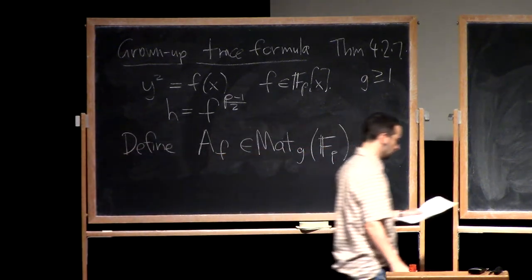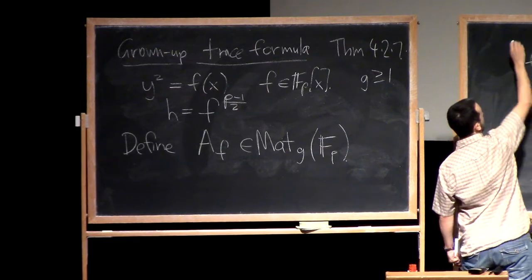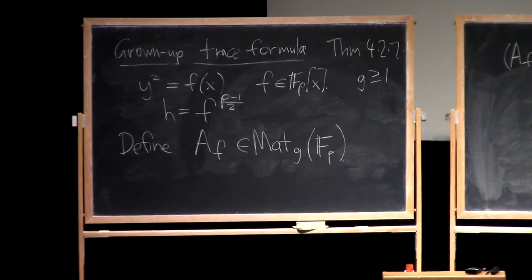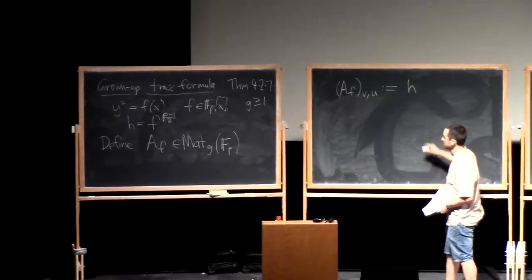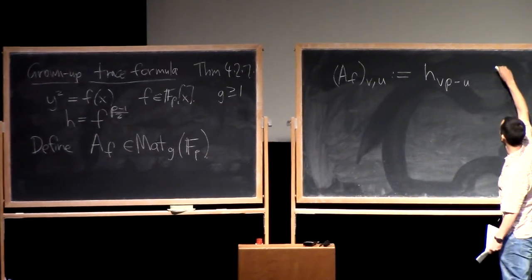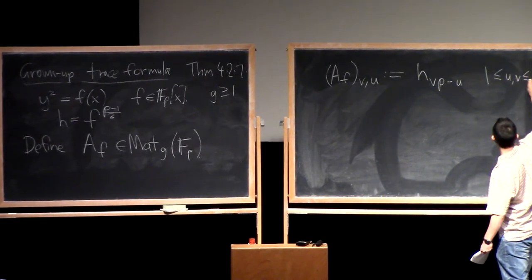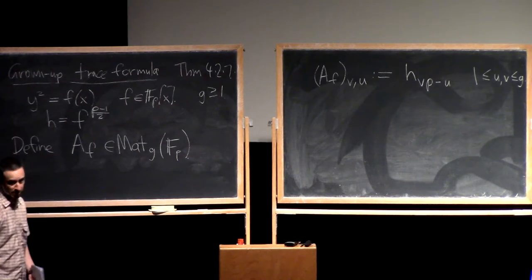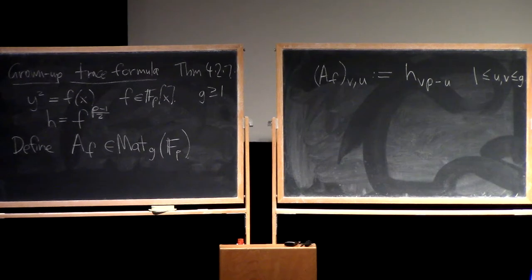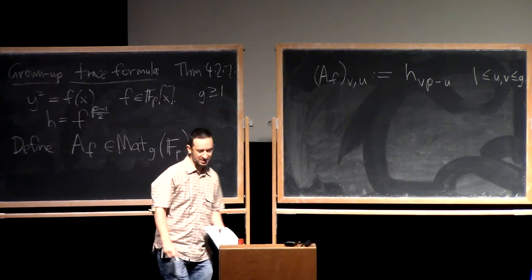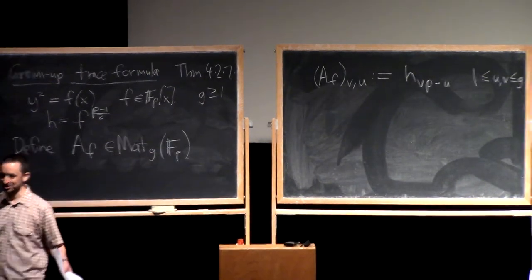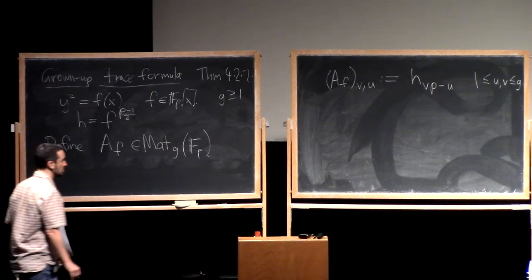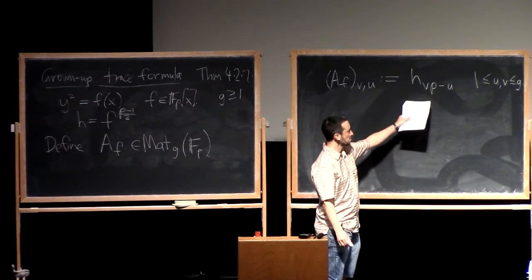The entries of A sub f are in F_p and given very explicitly: the entry in the v-th row and u-th column is a certain coefficient of h, specifically h at index vp minus u, for u and v between 1 and g. You probably recognize this — it's often called the Hasse-Witt matrix or the Cartier-Manin matrix of the curve. All I care about for this course is that the entries are given by certain coefficients of h.